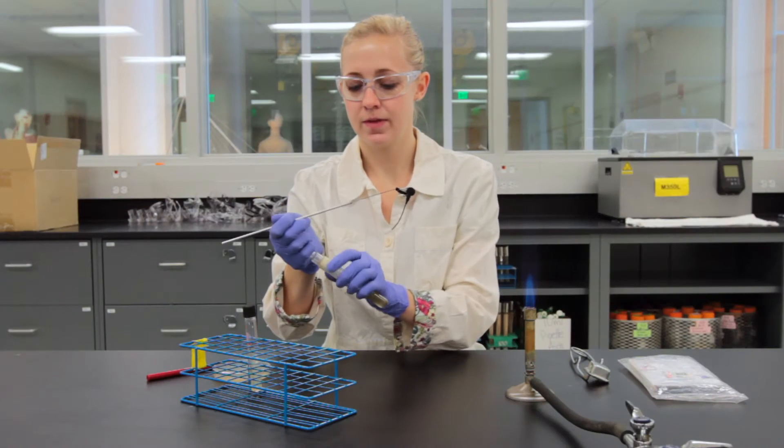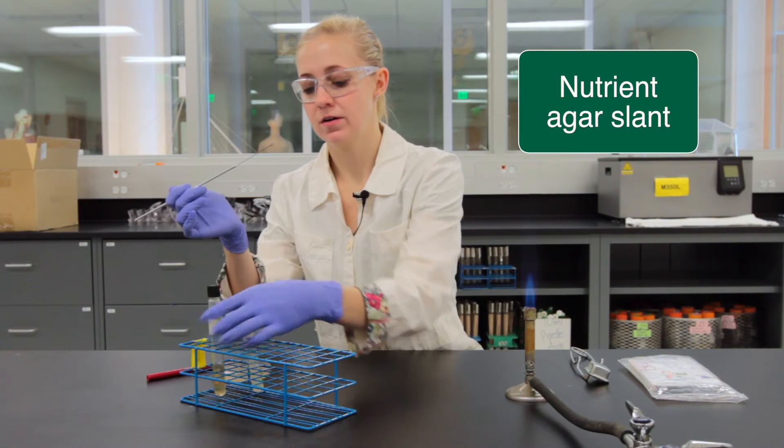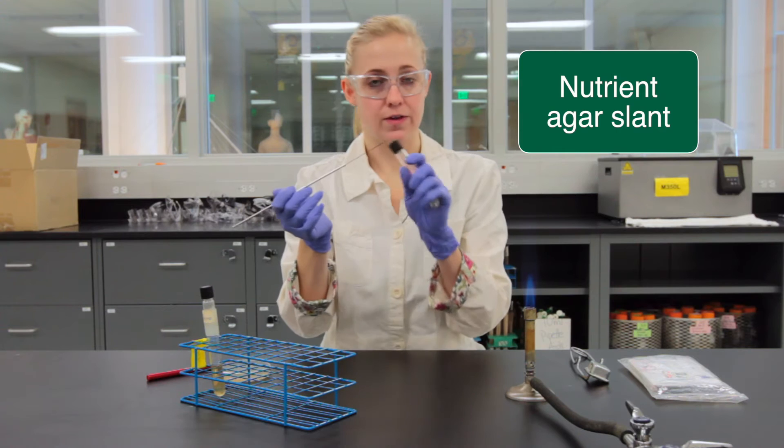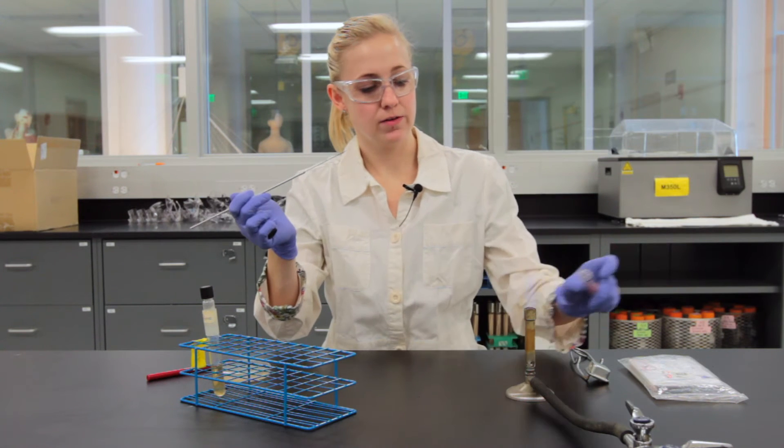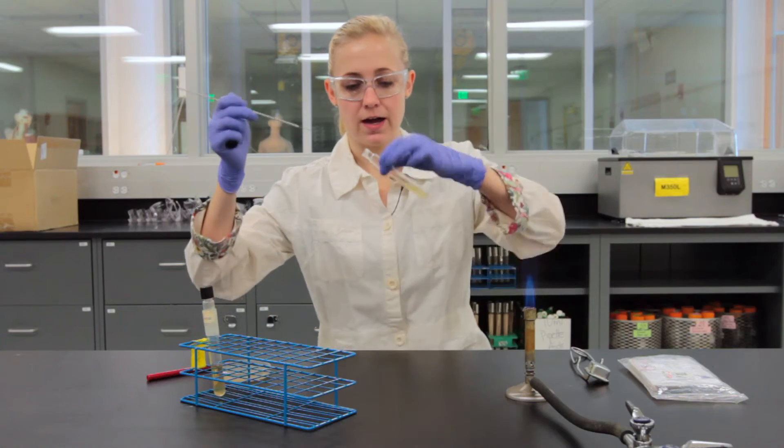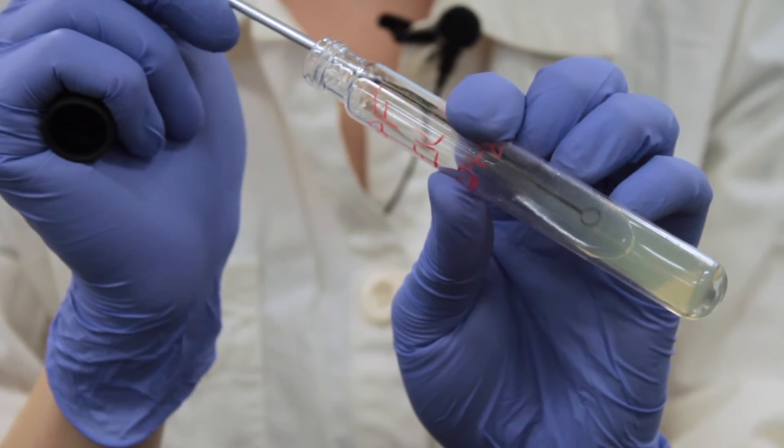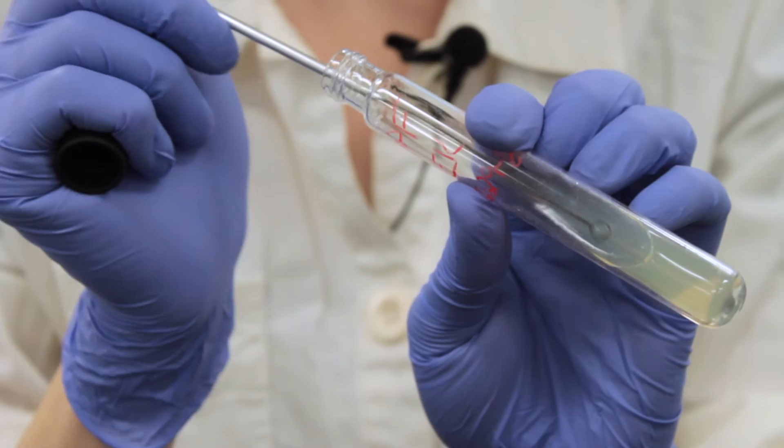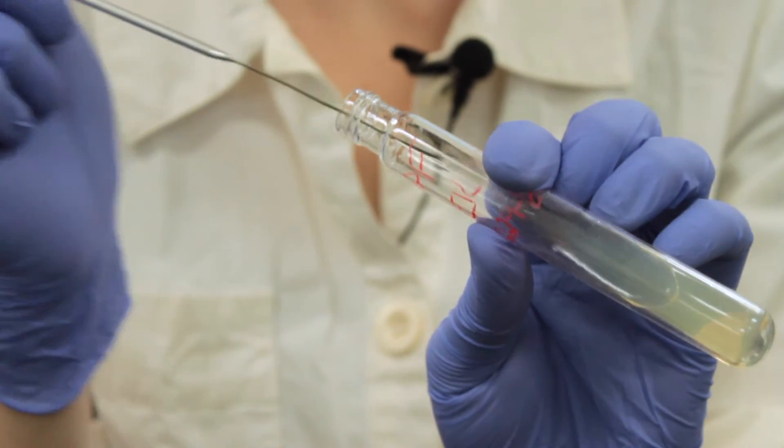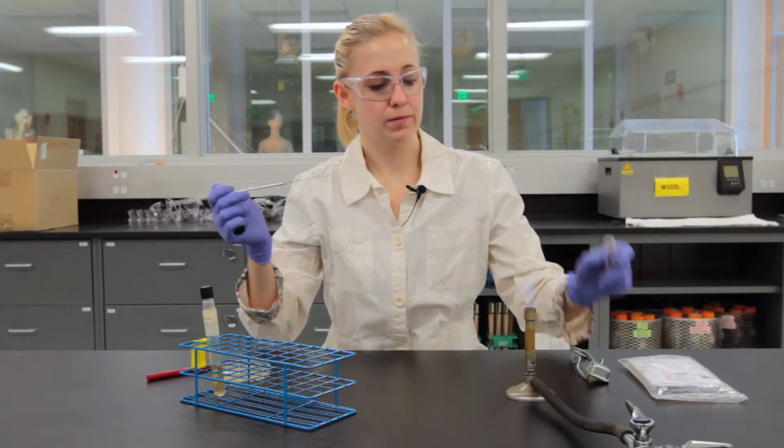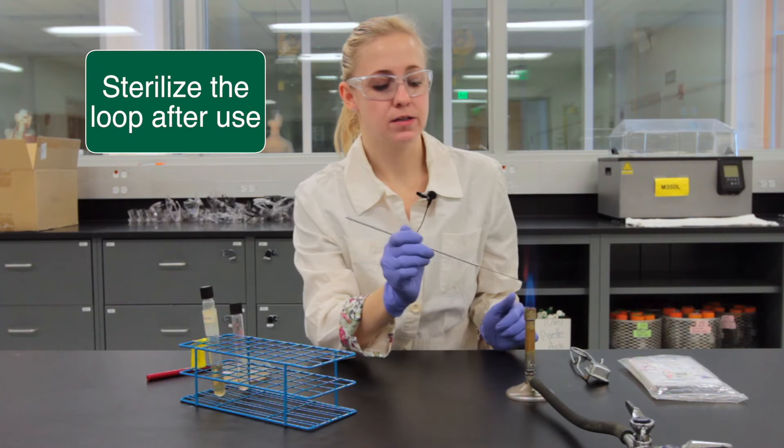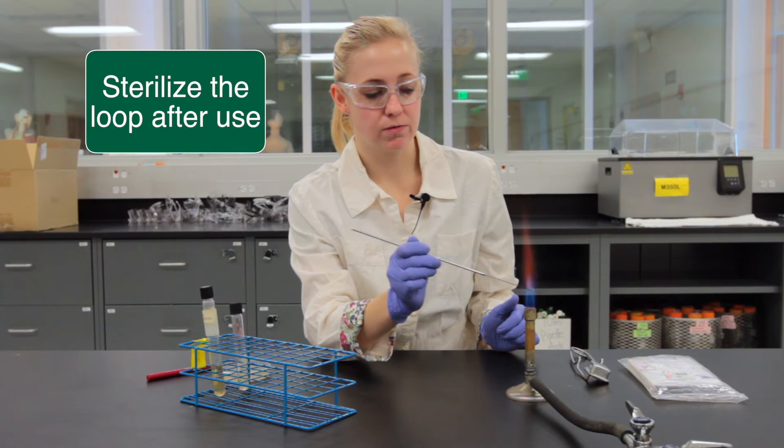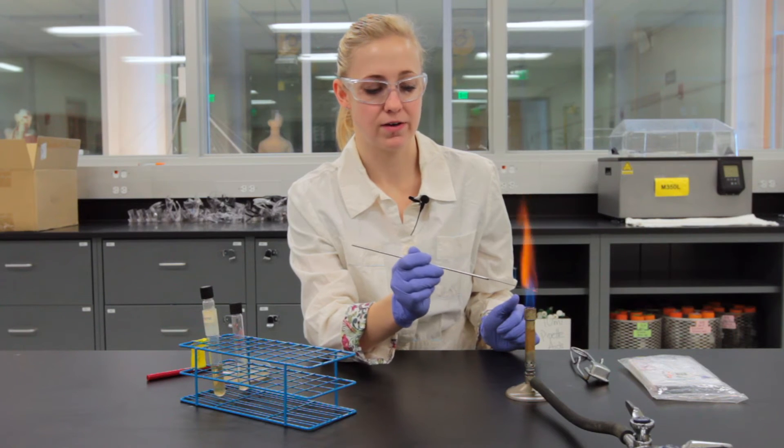Now I'll flame it again put the cap back on and grab the nutrient agar slant that I've already labeled. I'll grab the slant take the lid off flame it to prevent bacteria from falling in and go all the way down into the bottom and rub my loop over the surface all the way up out of the tube and then flame the top put the cap back on and then flame my loop so it becomes nice and red hot again so that way it's sterile and it's killing all the bacteria.